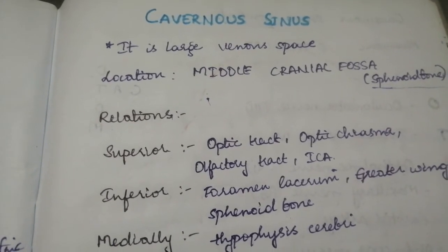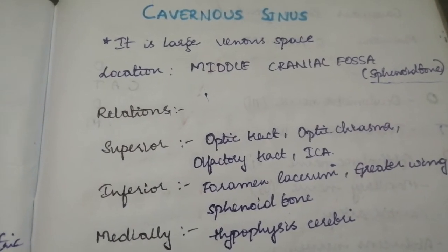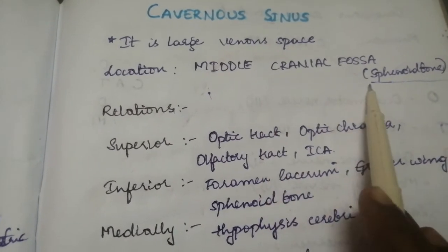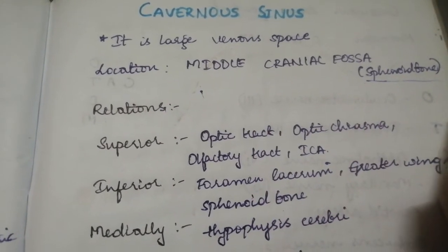It is a large venous space and its location is your middle cranial fossa. It's sphenoid bone.